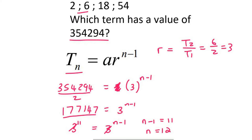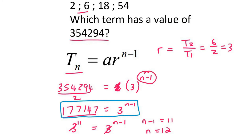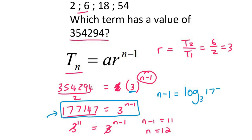Let's use the log method. With the log method, you would come up to here and say the exponent, which is n minus 1, equals the log. The number that was with the exponent comes first, and then the other number comes next — so it's log base 3 of 177147. Type that in and that gives us 11. Then, of course, if you take the minus 1 over, you get n equals 12.